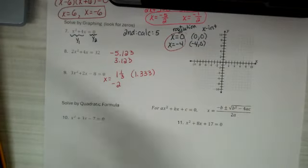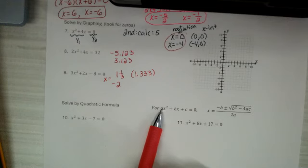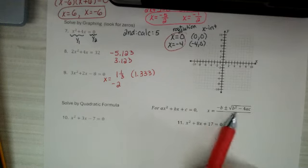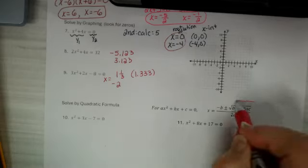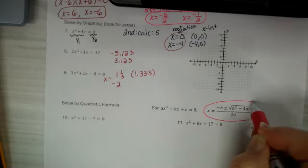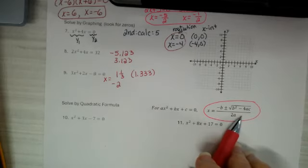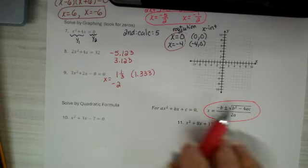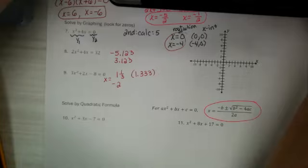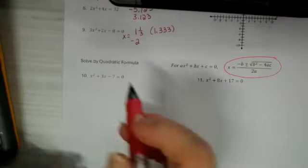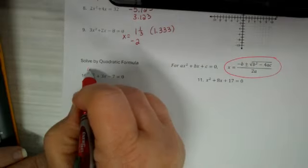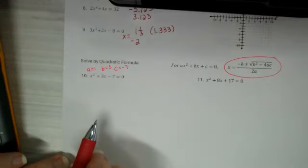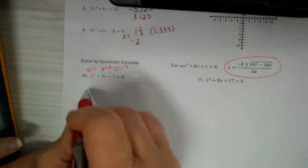Let's talk about the quadratic formula. If you have your equation in ax squared plus bx plus c in standard form, here's your quadratic formula: negative b plus or minus the square root of b squared minus 4ac, all over 2a. We're just going to identify what's a, b, and c and plug them into the formula. So here we go: a is 1, b is 3, and c is negative 7.